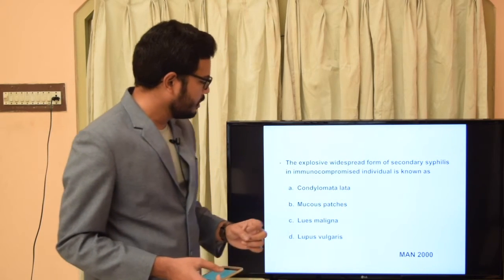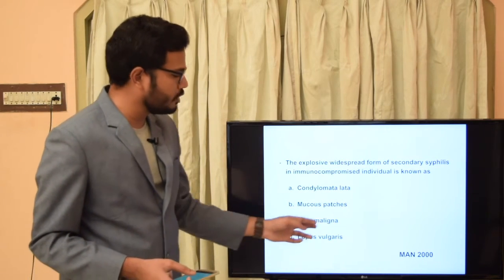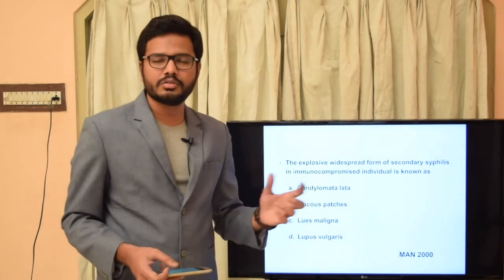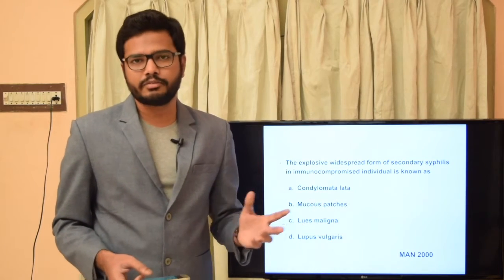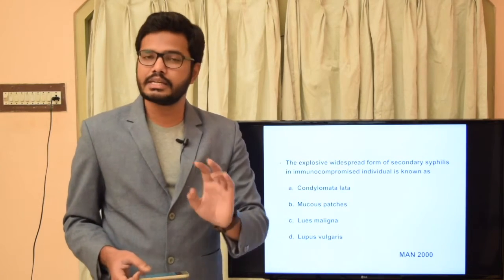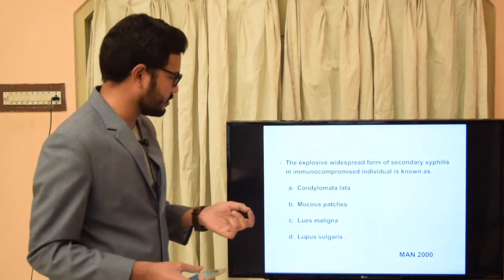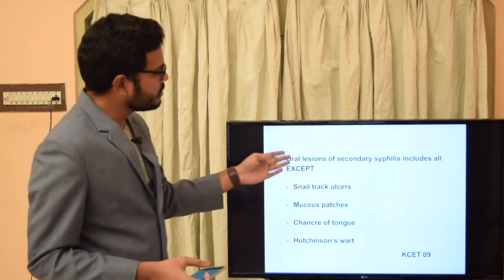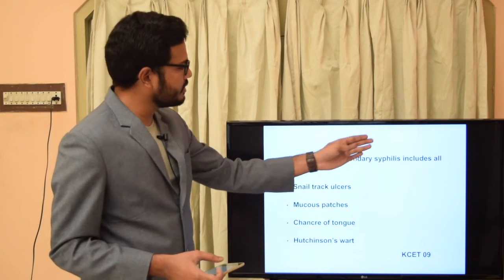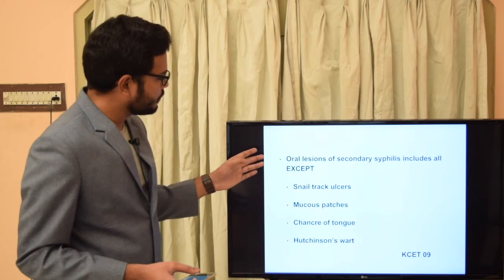The explosive, widespread form of secondary syphilis in an immunocompromised individual is known as lues maligna — a direct question. It is an explosive, widespread form of syphilis seen in immunocompromised patients.